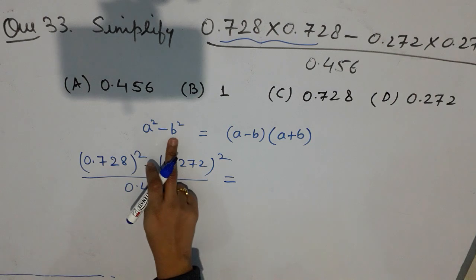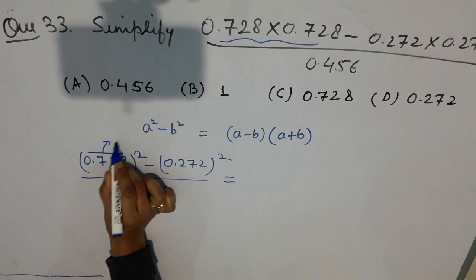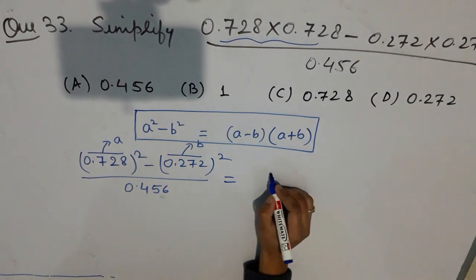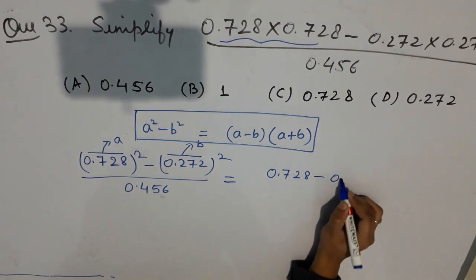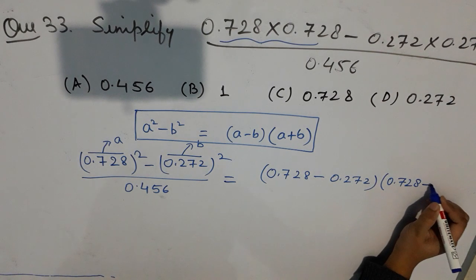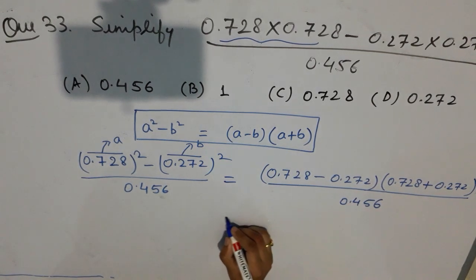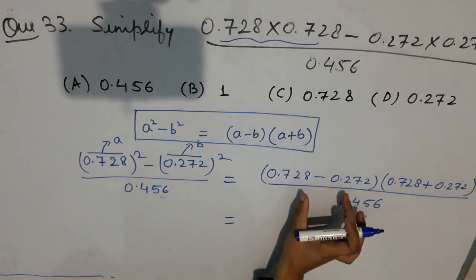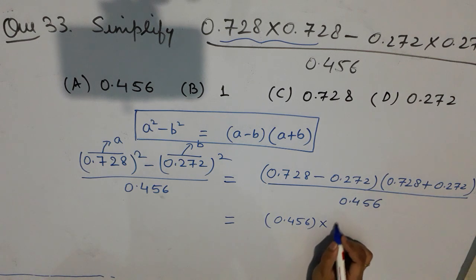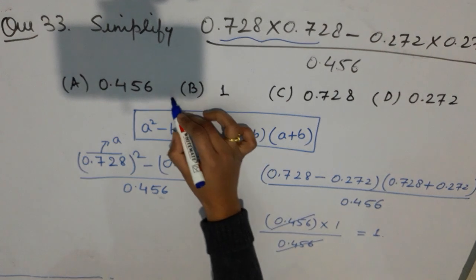Apply the identity a² − b² = (a − b)(a + b): write (0.728 − 0.272)(0.728 + 0.272) divided by 0.456. When you subtract you get 0.456, and when you add the two numbers you get 1. So 0.456 divided by 0.456 cancels, and the answer is 1 — option number B.